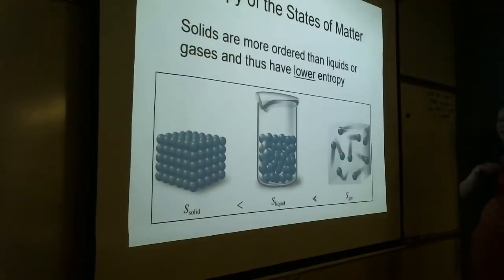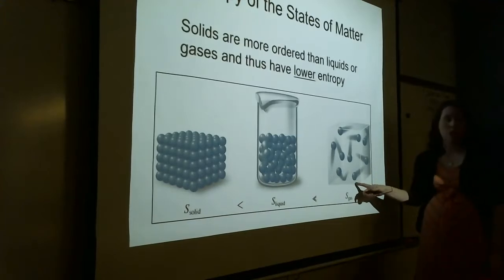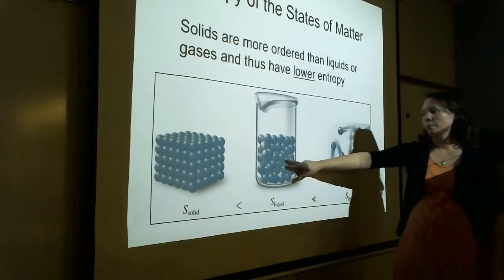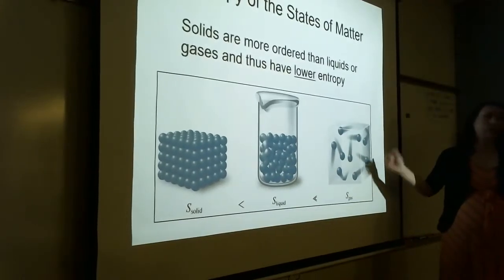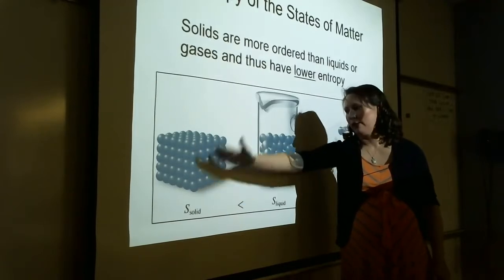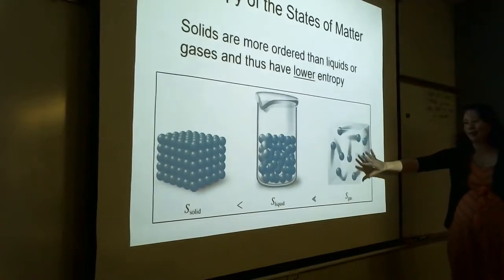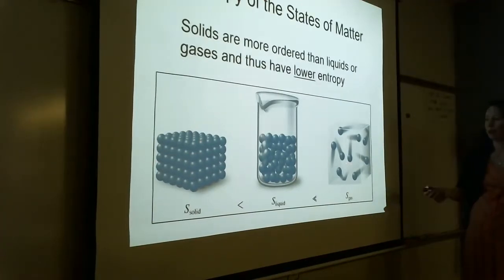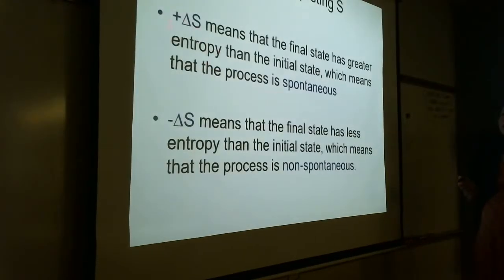Each state of matter has different positional entropy. A gas is way more disordered than a liquid, and a liquid is much more disordered than a solid. Solid has lowest entropy, liquid has medium entropy, gas has way high entropy. As you increase temperature, entropy increases even in the solid state. Positive delta S means spontaneous; negative delta S means non-spontaneous.